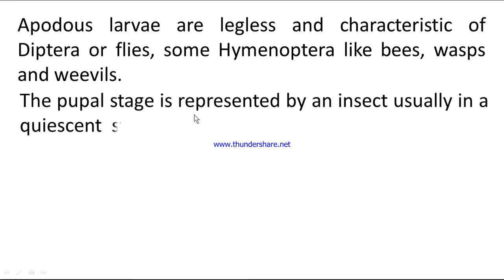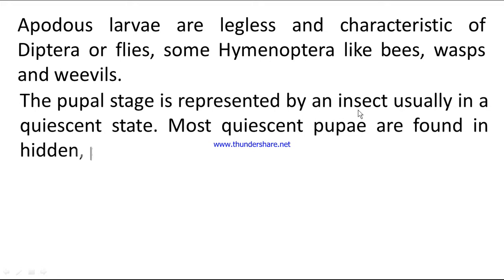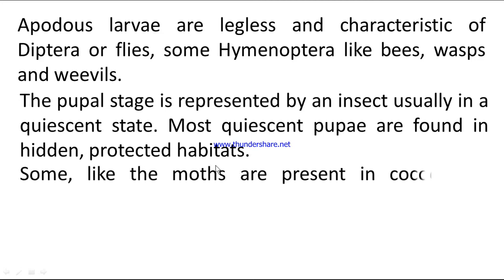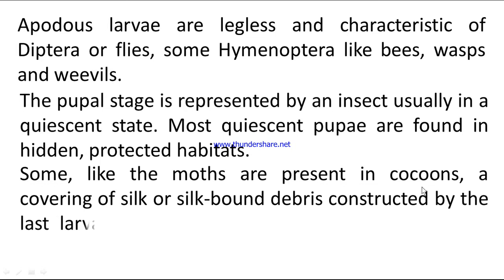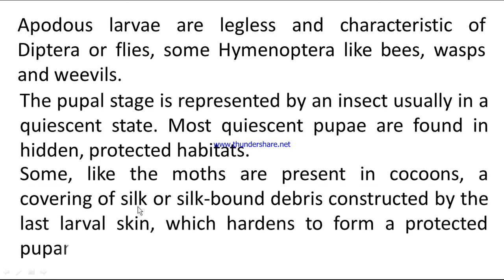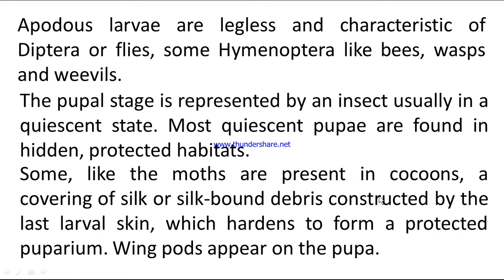The pupal stage is represented by an insect usually in a quiescent state. Most quiescent pupae are found in hidden, protected habitats. Some, like the moths, are present in cocoons — a covering of silk or silk-bound debris constructed by the last larval skin, which hardens to form a protected puparium. The wing parts appear on the pupae.